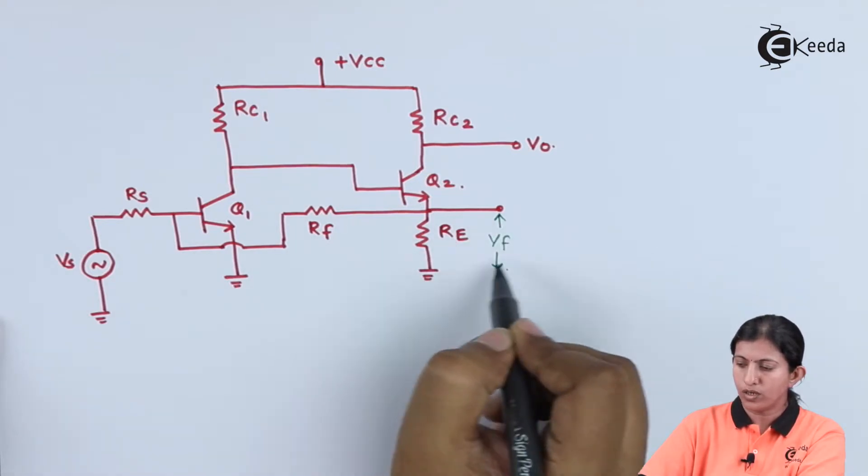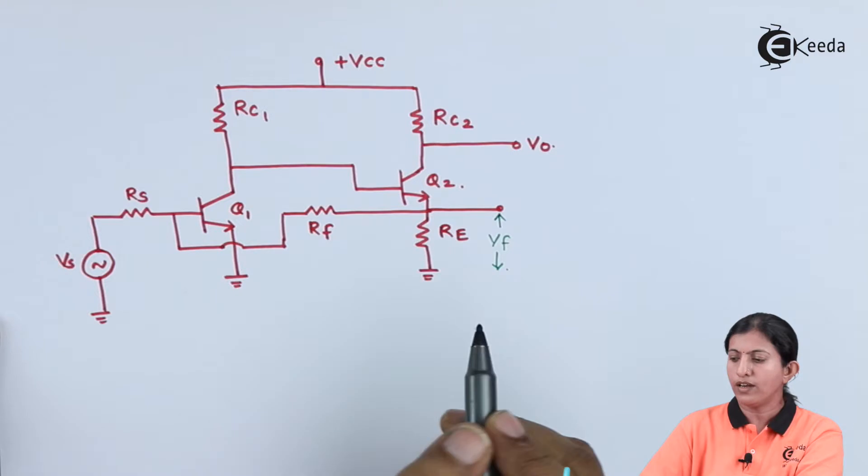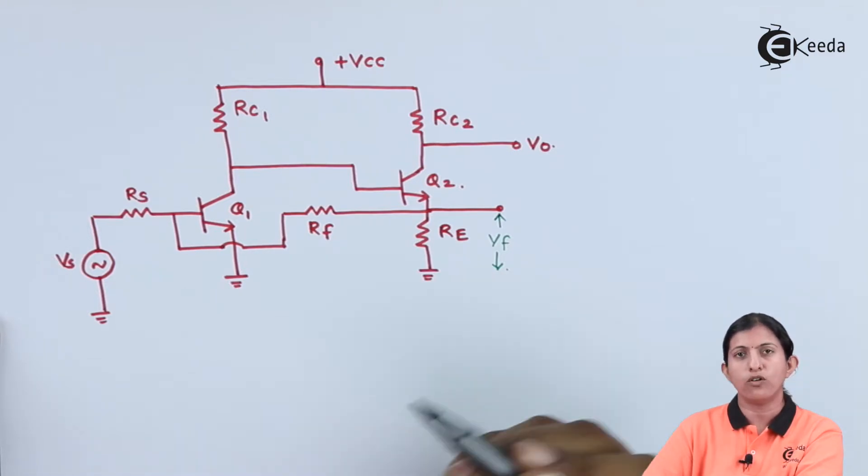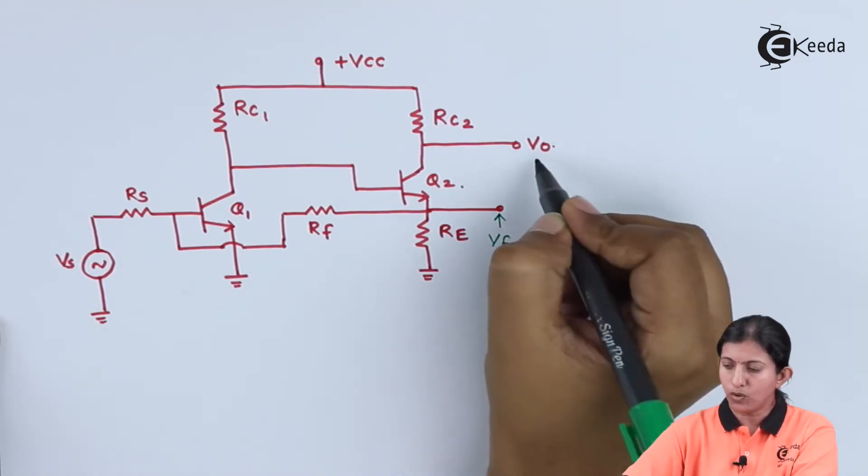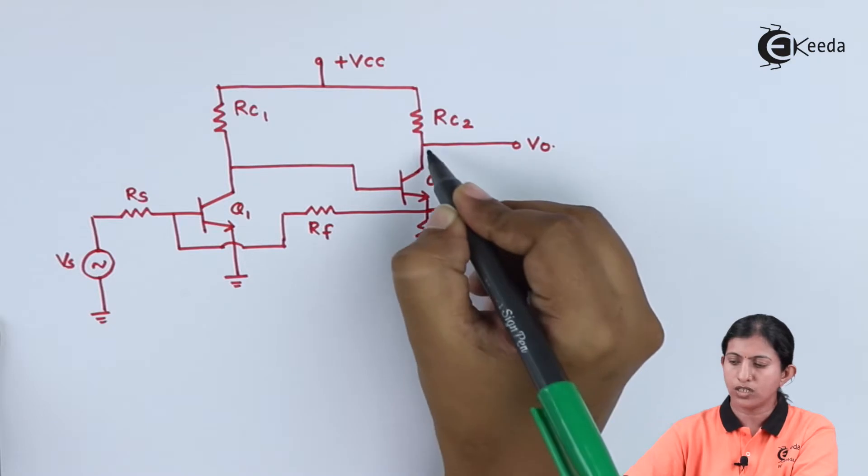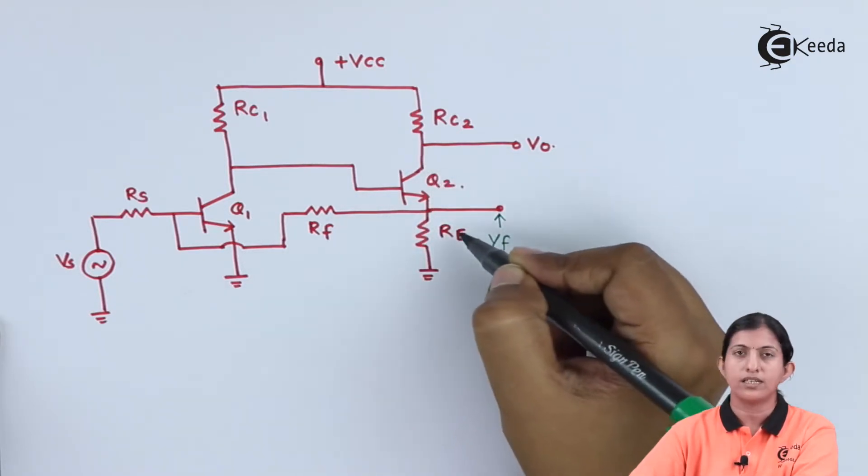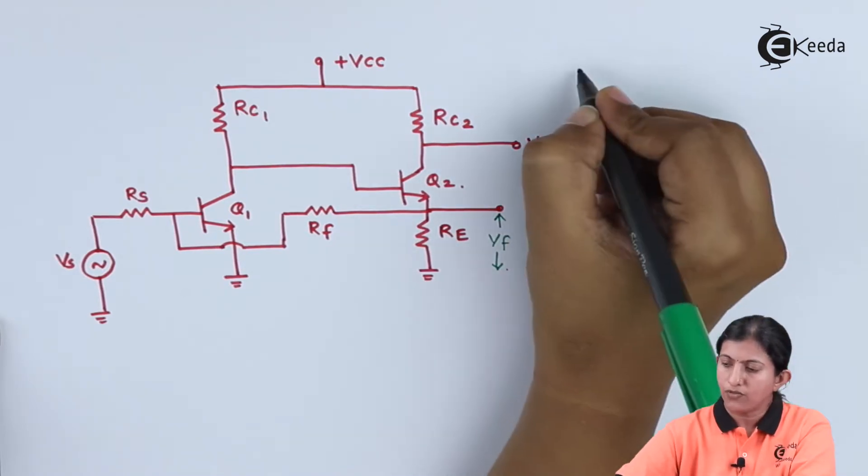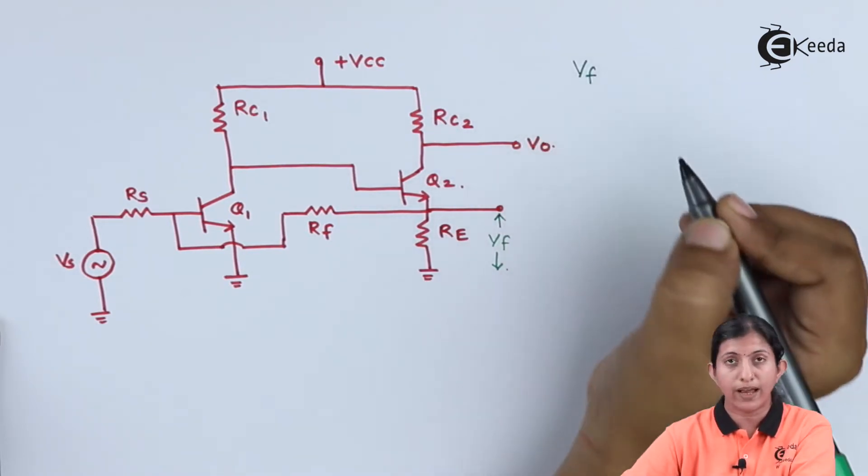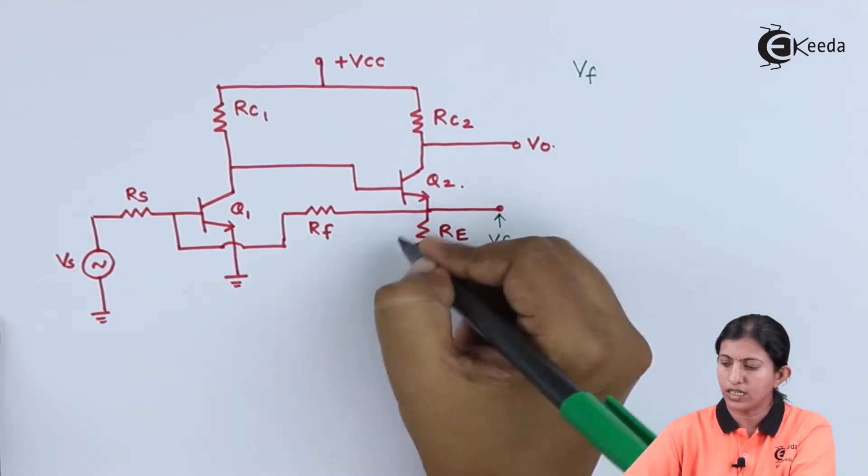This voltage is basically a feedback voltage. Now we will find out which type of sampling network this is, whether voltage sampling or current sampling. The output voltage is taken across the collector terminal, while the feedback voltage is taken across Re. So Vf, the feedback voltage, is the voltage drop across resistor Re.